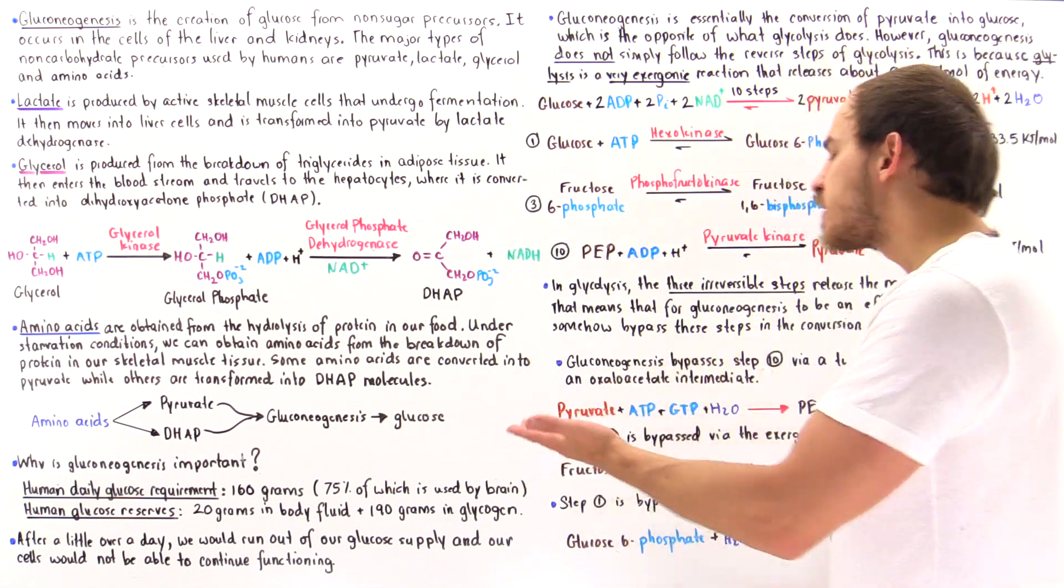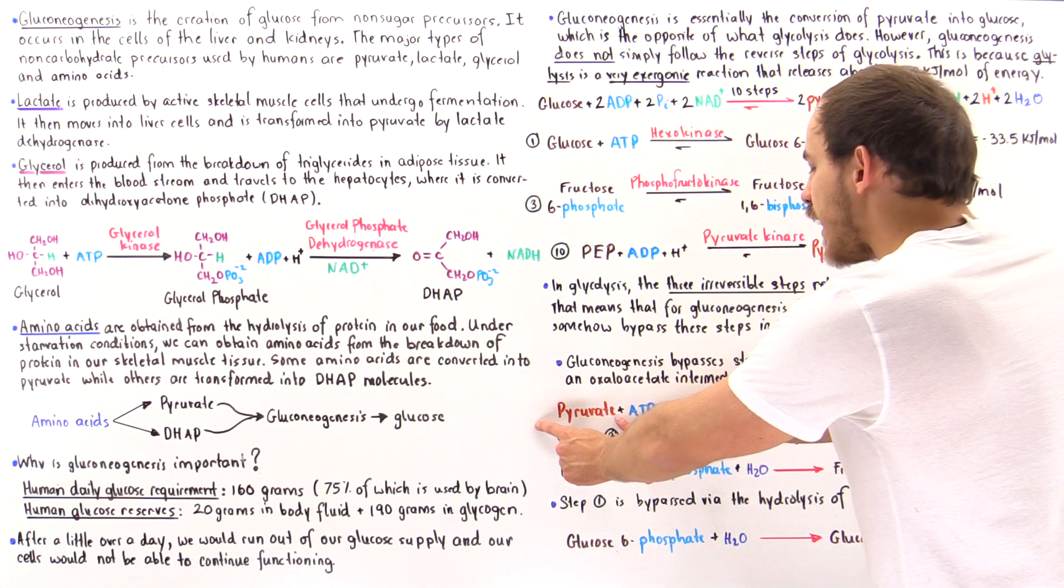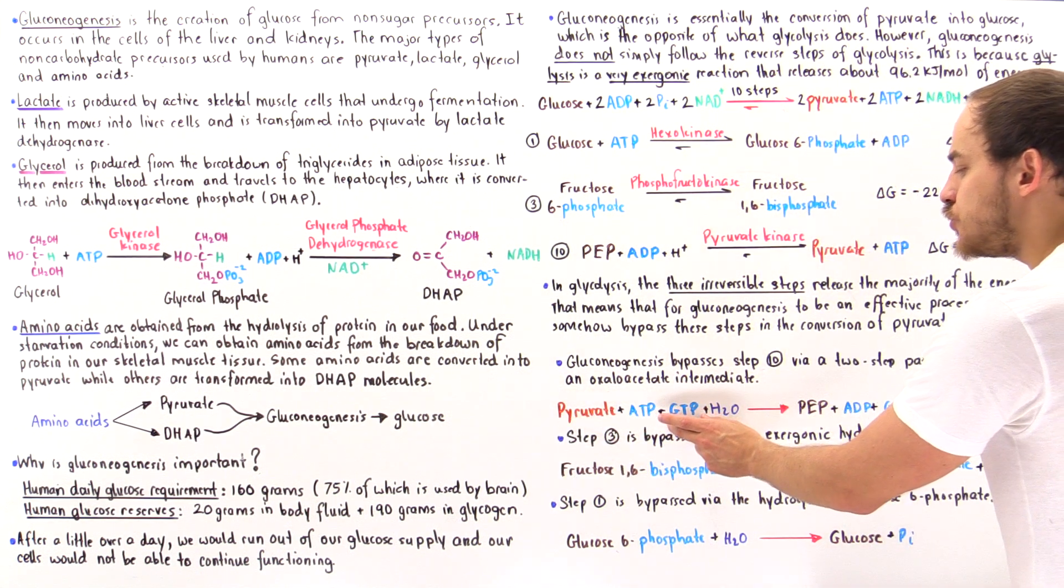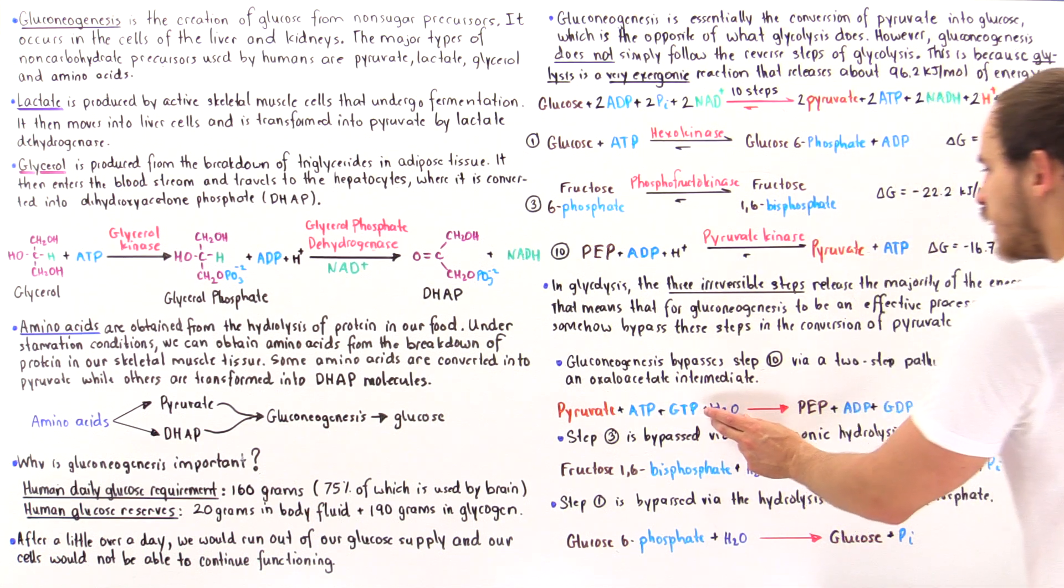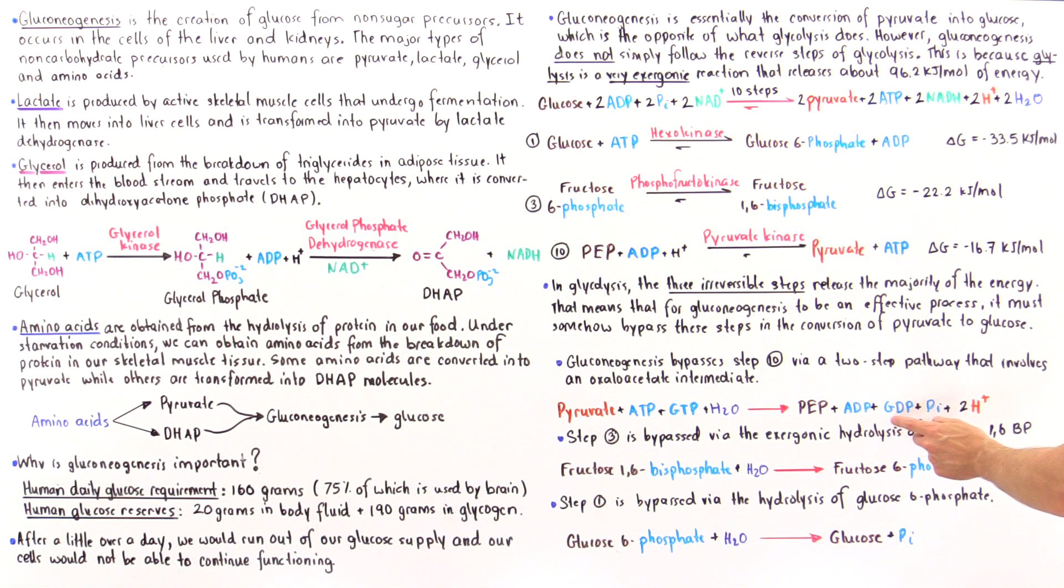This is the reaction that we're basically going to get: pyruvate plus ATP plus GTP plus a water molecule gives us that PEP molecule that we want, the ADP, GDP, and orthophosphate, and two H+ ions.